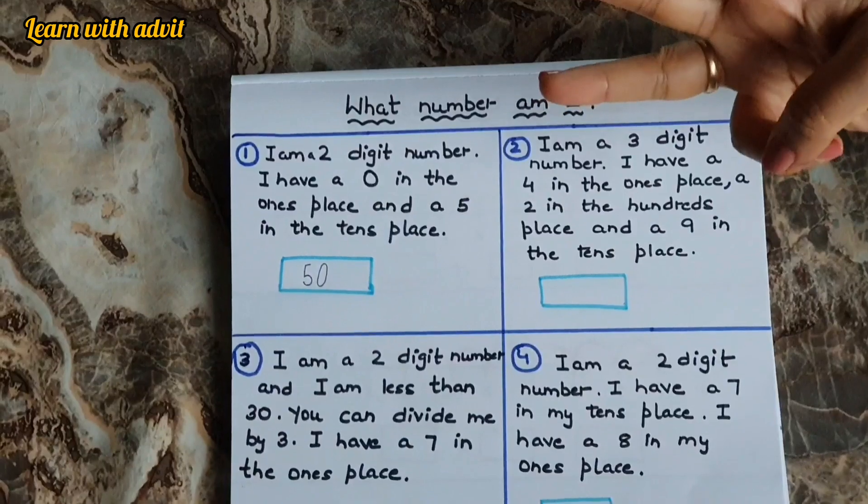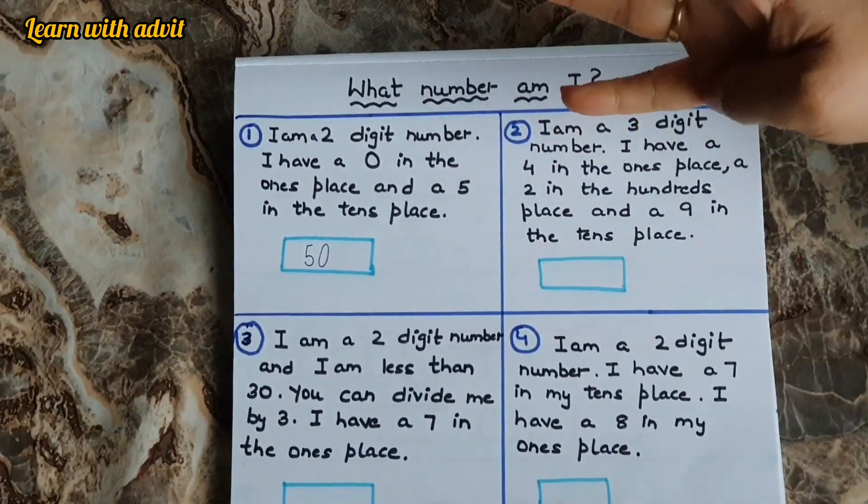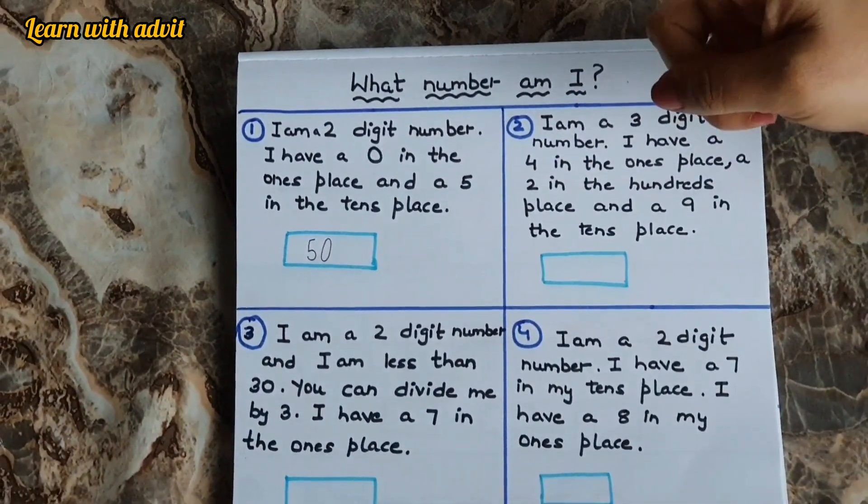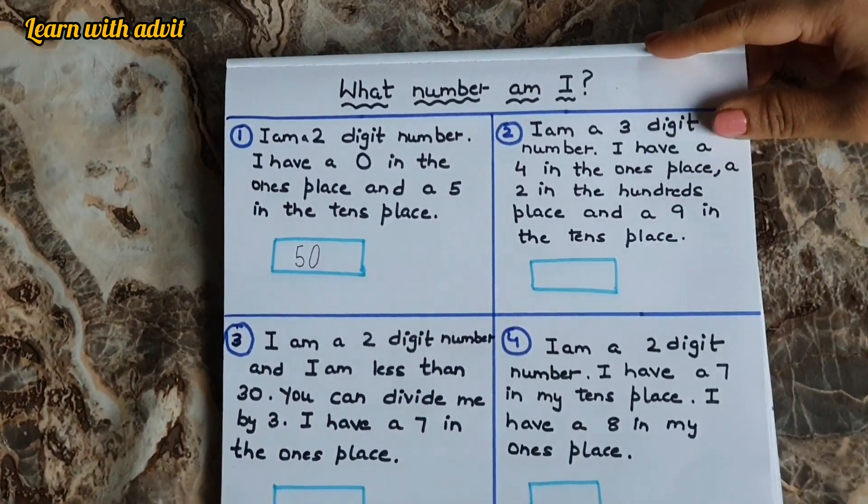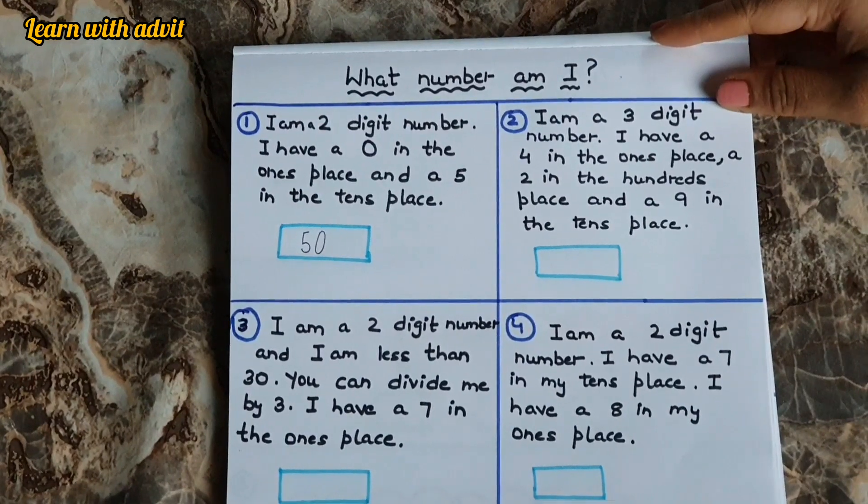I am a 3 digit number. I have a 4 in ones place, 2 in hundreds place and 9 in tens place. What number am I? Two hundred and ninety-four.